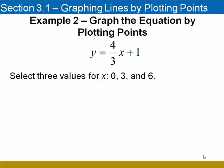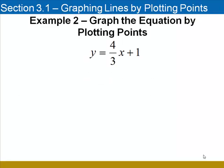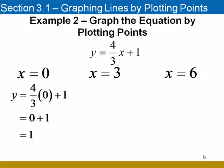Because when I multiply 4 thirds by these three numbers, I'm left with an integer result. It's easier to plot points involving integers than it is to plot points involving fractions. Here we go. I'm going to substitute 0 for x. 4 thirds times 0 is 0, adding 1, I get a y coordinate of 1, so 0, 1 is my first ordered pair.